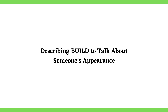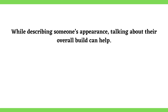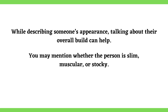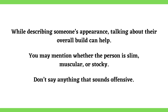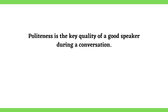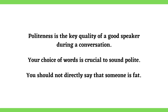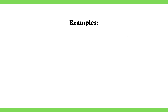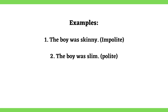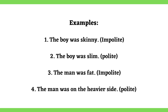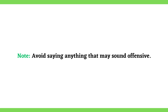Describing build to talk about someone's appearance: While describing someone's appearance, talking about their overall build can help. You may mention whether the person is slim, muscular, or stocky. Don't say anything that sounds offensive — politeness is the key quality of a good speaker. Your choice of words is crucial to sound polite. You should not directly say that someone is fat. Examples: The boy was skinny. The boy was slim. The man was fat. The man was on the heavier side. Note: avoid saying anything that may sound offensive.